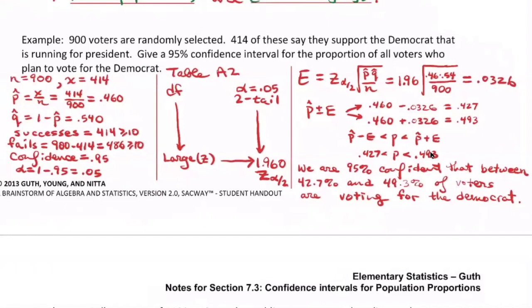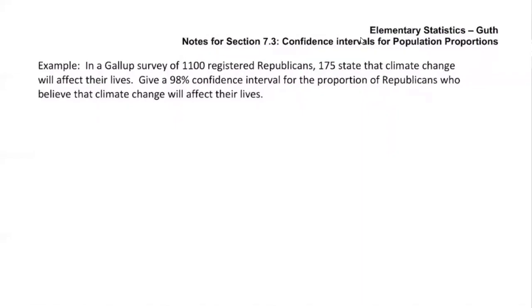On the exam, round according to what each problem says. For proportions the rule is three significant figures; for normal probabilities I used four significant figures. Just read carefully and make sure you see the rounding instruction.